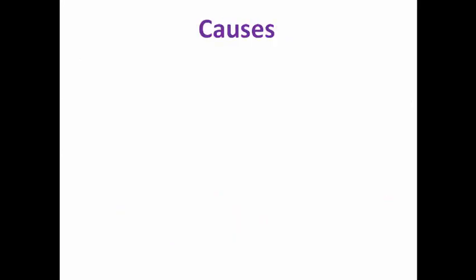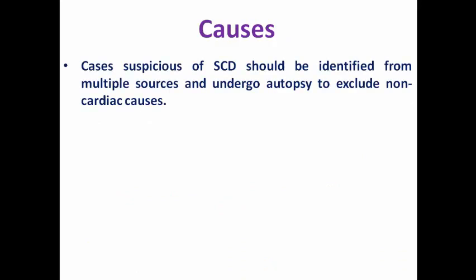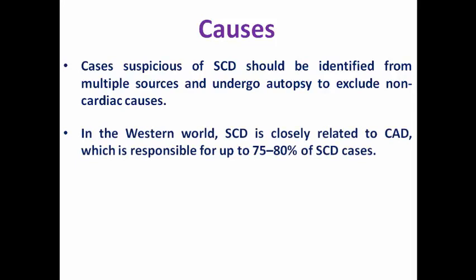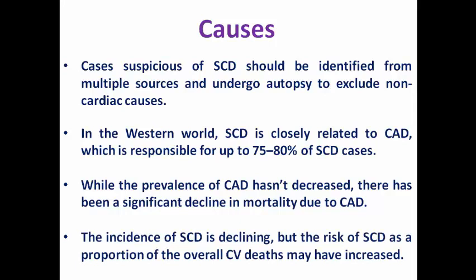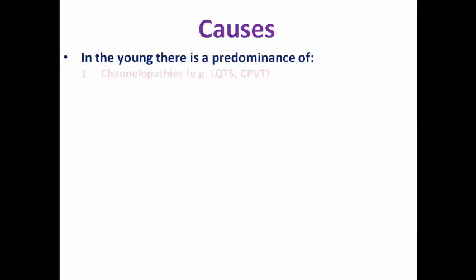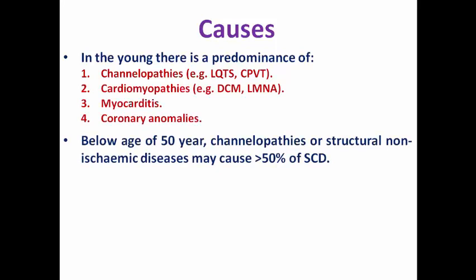Cases suspicious for sudden cardiac death should be identified from multiple sources and undergo autopsy to exclude non-cardiac causes. In the Western world, sudden cardiac death is closely related to coronary artery disease, responsible for about 75–80% of cases. There has been a significant decline in mortality from coronary artery disease due to advances in early invasive strategy and primary PCI for STEMI. The most common causes in the young population are channelopathies, cardiomyopathies, myocarditis, and coronary anomalies — below age 50, channelopathy or structural non-ischemic heart disease may cause more than 50% of sudden cardiac death cases.